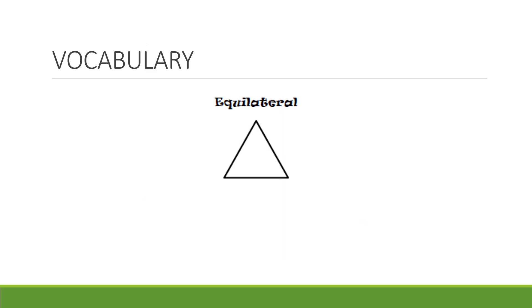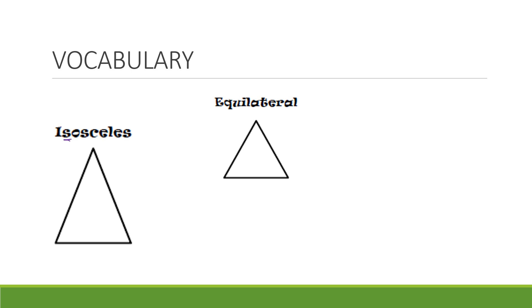All right, for starters, let's revisit this vocab. When we talk about isosceles, if we remember, when we see those two s's, we know that isosceles means that two sides are congruent. So in order to show that on my picture, I'm going to mark the two sides congruent. So if you see this, we know that it's automatically an isosceles triangle.